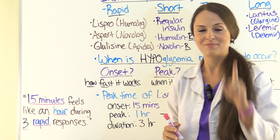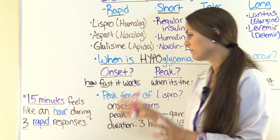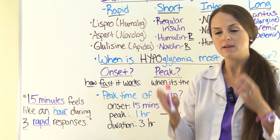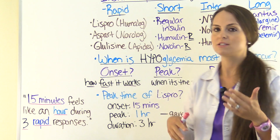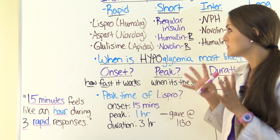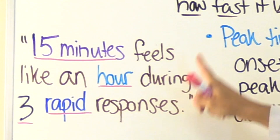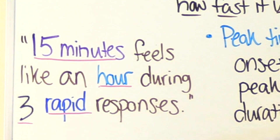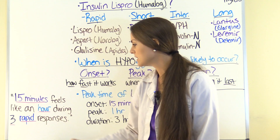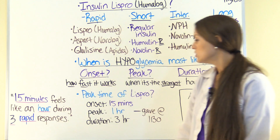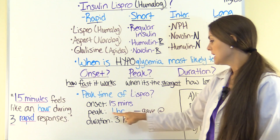That's where the mnemonics come into play. For the rapid-acting category, remember this mnemonic: 'Fifteen minutes feels like an hour during three rapid responses.' This tells you the onset, peak, and duration in chronological order, and tells you it's for Rapid insulin. The onset is fifteen minutes. The peak — when it has the strongest effect and the most risk for hypoglycemia — is one hour. And the duration is three hours.